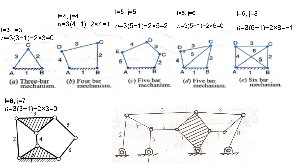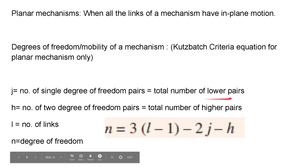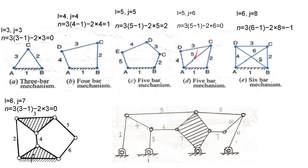Then we have another five-bar mechanism. There are five links, four joints, and six pairs counted as lower pairs. The degrees of freedom come out to zero, so this also becomes a truss structure and is not useful as a mechanism or machine.